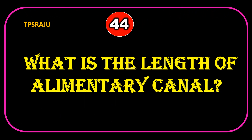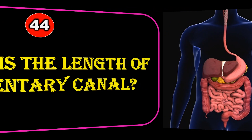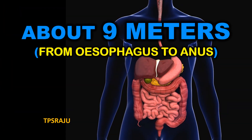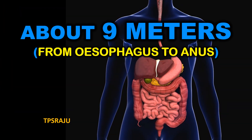What is the length of the alimentary canal? About 9 meters from the esophagus to the anus.